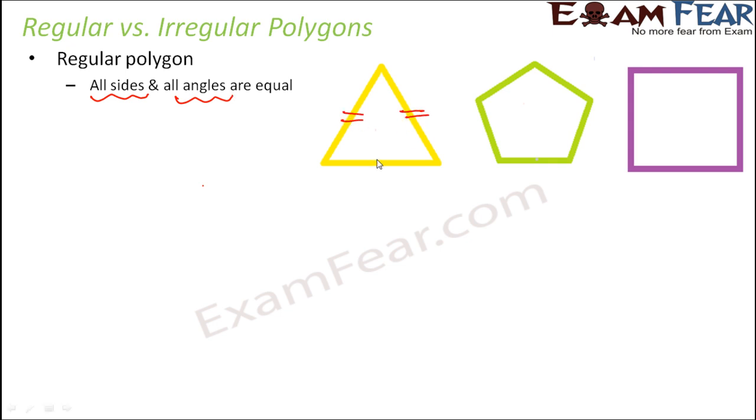For example, here, this side, this side and this side, they are all equal in length. So let's call this as ABC. So in this case, AB is equal to BC is equal to AC. So the sides are equal and also these angles are equal. That is angle BAC is equal to angle ACB is equal to angle CBA. So these are the two criterias which should be satisfied for a polygon to become a regular polygon.